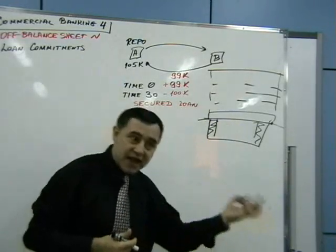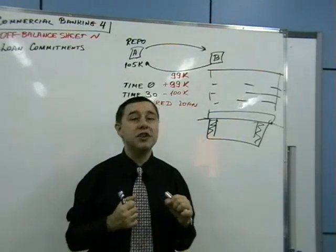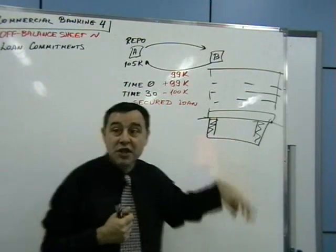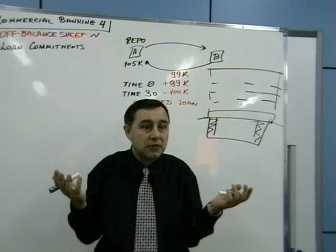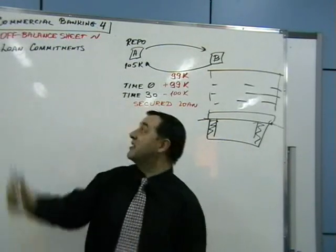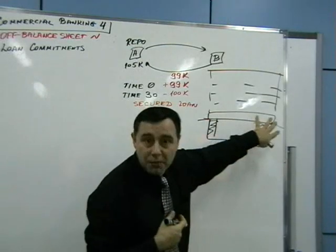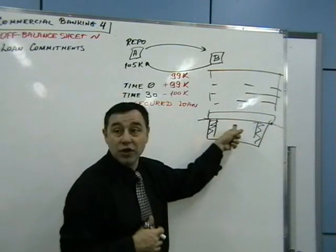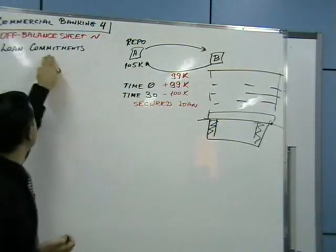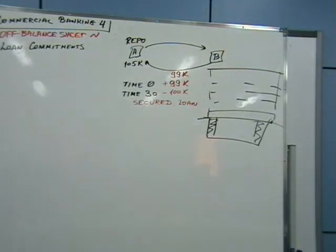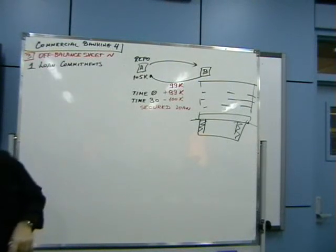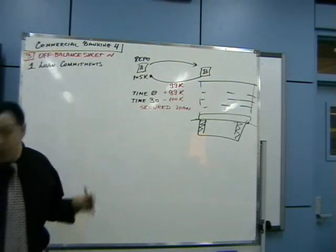Construction is way more than concrete, bricks, and glass — it includes electricity, security, and more. If you're a construction company needing five million to build a hotel, you don't want to get only one million for the foundation and then be stuck unable to get the rest. You want to commit the bank — as long as you complete the foundation, the bank will give you the second and third tranches to continue construction. These are the loan commitments.